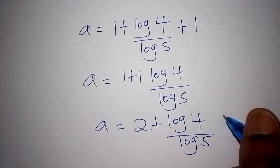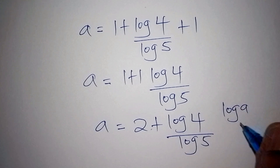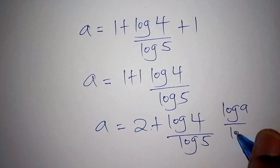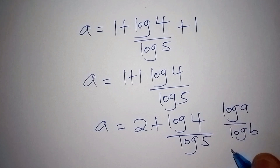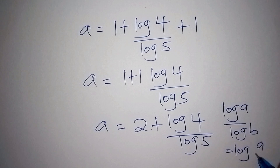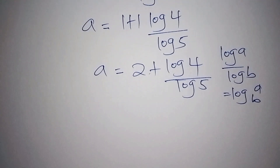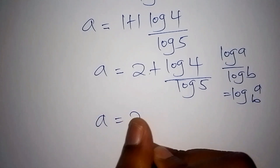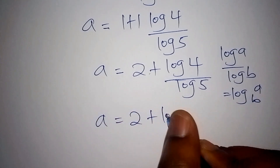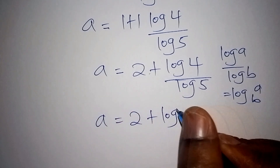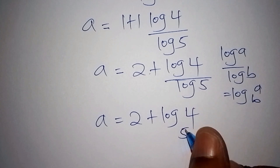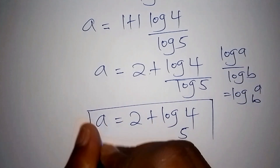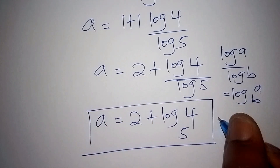Note that when you have log of a over log of b, this can also be written as log of a to the base of b. So log of 4 over log of 5 becomes log of 4 to the base of 5. Therefore, a equals 2 plus log base 5 of 4. This is our correct answer.